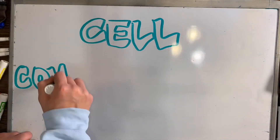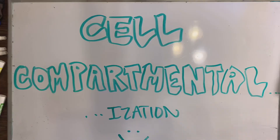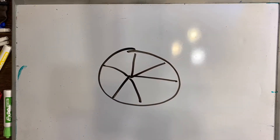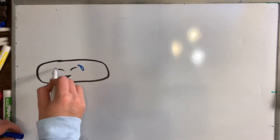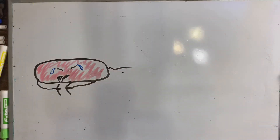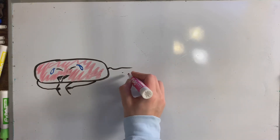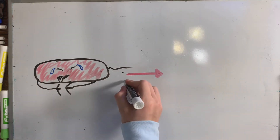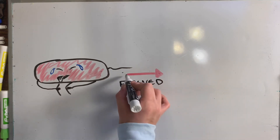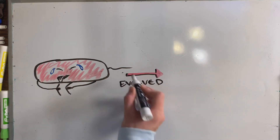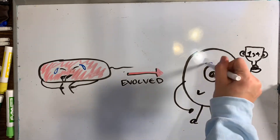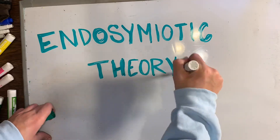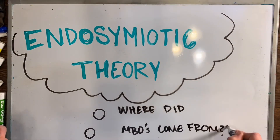Our last topic is cell compartmentalization. This is basically the way organelles in eukaryotic cells work in separate areas to get jobs done more efficiently. Before cells evolved this way, back when everything was prokaryotic, cells could only perform one task at a time. Over time, cells evolved so that multiple organelles can be active at the same time, allowing multiple tasks to be performed simultaneously.